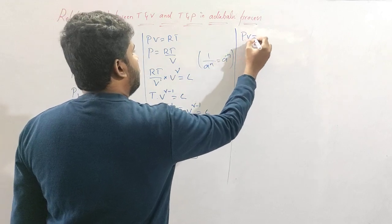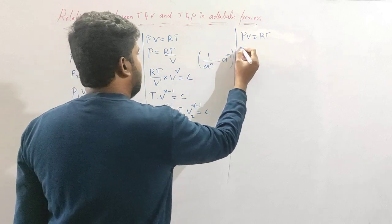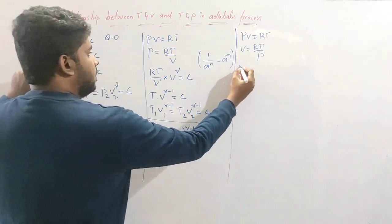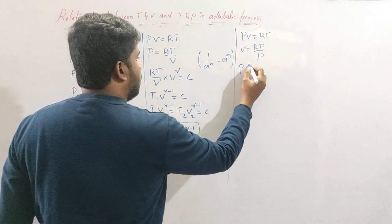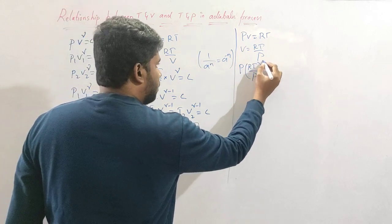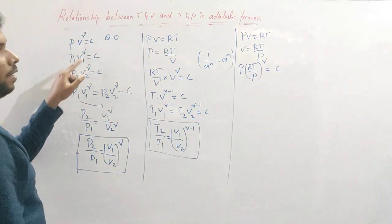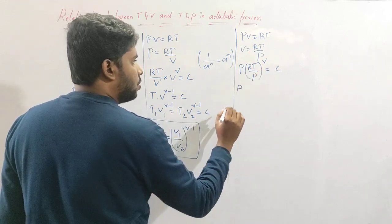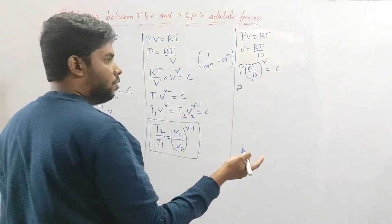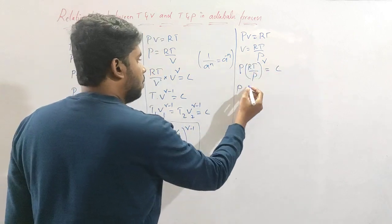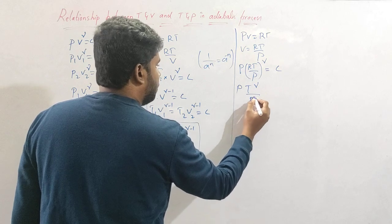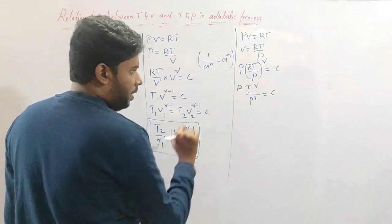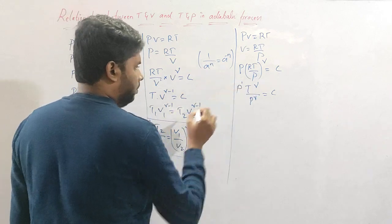Now, considering again the ideal gas equation PV = RT, I take V = RT/P. Substituting V back into PV^γ = C, I get P × (RT/P)^γ = C. Since R^γ is also constant, taking it to the side, I am left with T^γ / P^γ = constant C.